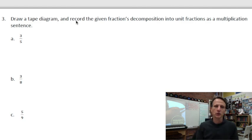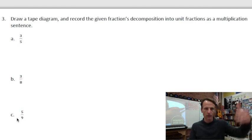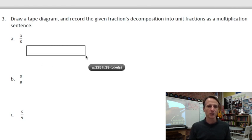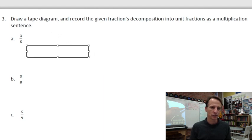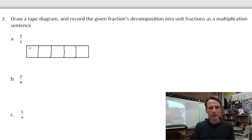For problem three: draw a tape diagram and record the given fraction's decomposition into unit fractions as a multiplication sentence. Starting with three-fifths — all three fractions here are proper, less than one. I'll draw four lines inside a rectangle to give me five partitions, equally spaced. Four lines gives me five parts. I'll shade in three of them.